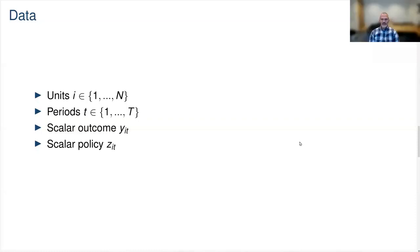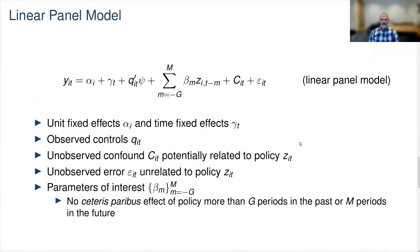We will model the relationship between the outcome variable and the policy of interest using a linear panel model, where the outcome depends on fixed effects, time effects, control variables denoted Q_it, and the policy variable itself. We will allow the policy to have a dynamic effect on the outcome variable of interest, captured by the parameters beta. The parameters beta are then going to be the objects of interest.